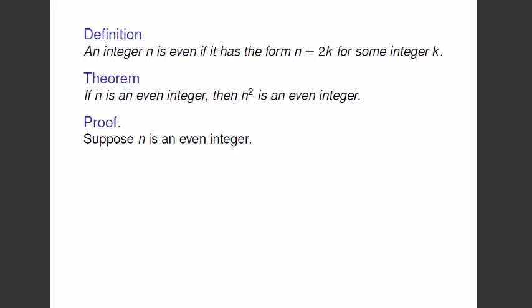But you can't go supposing any other magical things that you would like to be true. So we're allowed only to suppose that n is an even integer. Now we're done with the phase of assuming our hypotheses.